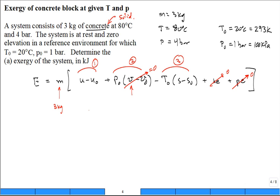Now, how do I calculate the change in internal energy for incompressible substance? Let's use that specific heat. So that's going to be C T minus T naught.